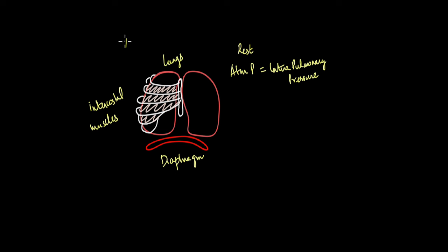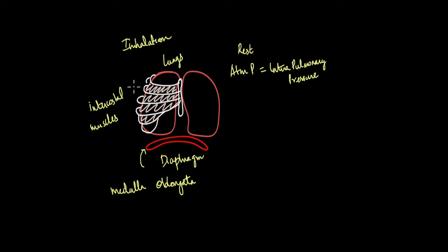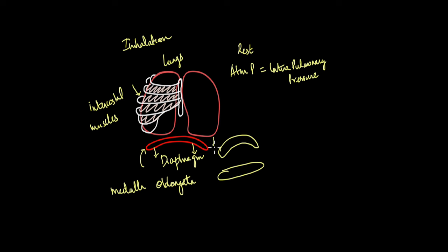This pressure gradient is created during inhalation. The diaphragm and the intercostal muscles receive nerve signals from the region of the brain known as the medulla oblongata — the region that controls the involuntary mechanism of breathing. As they receive these nerve signals, the diaphragm and the intercostal muscles contract. As the diaphragm contracts, it is pulled downwards. The diaphragm is a dome-shaped muscle and as it contracts, it flattens. This flattening causes the thoracic cavity to expand downwards as well, causing an increase in lung volume.